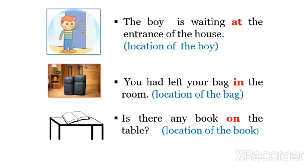The boy is waiting at the entrance of the house. यहाँ boy की location बता रहे हैं — वह घर के entrance पर खड़ा है। You had left your bag in the room. यहाँ bag की location है — bag room के अंदर है। Is there any book on the table? क्या table पर कोई किताब रखी है? यहाँ book की location की बात हो रही है — book table के ऊपर है।